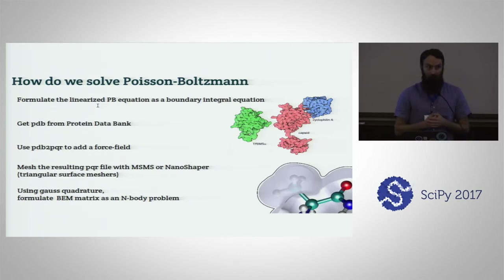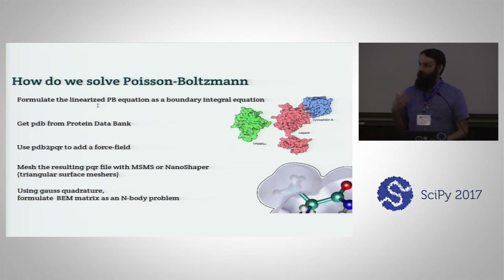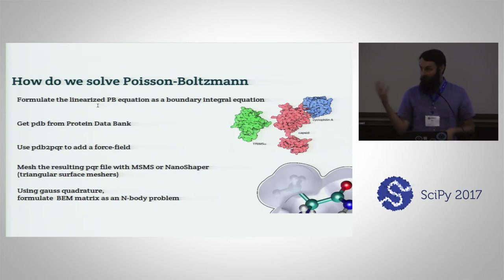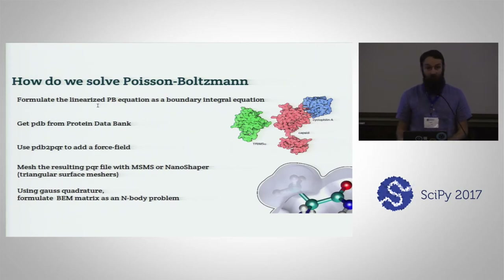Our approach is to formulate the linearized Poisson-Boltzmann equation as a boundary integral equation, then discretize and use the Yukawa Green's function. In terms of inputs, you get a PDB from the protein databank — a crystal structure of a folded protein giving atoms and composition. We then use PDB2PQR to add a force field, adding van der Waals radii and calculating charge at individual atom positions. We then mesh this with either MSMS or NanoShaper — triangular surface meshers built to work at molecular scale.